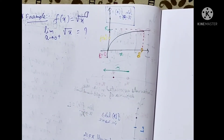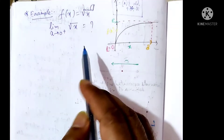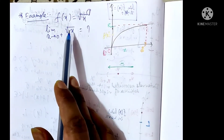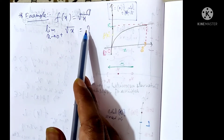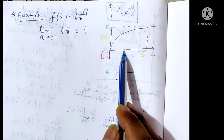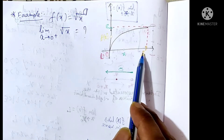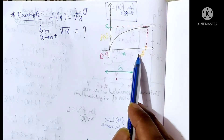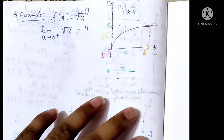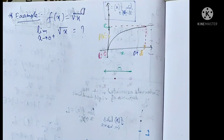We now give some examples to illustrate this definition. First example: let f(x) = √x. We want to find the limit as x tends to 0⁺ of √x. Here x₀ equals 0, so we consider x between 0 and 0 plus delta, going from 0 plus delta toward 0.